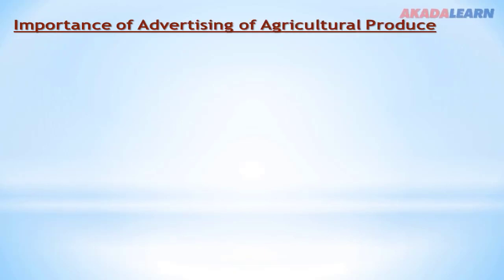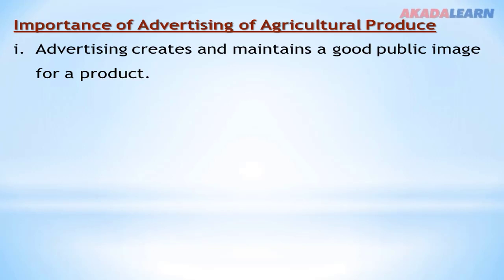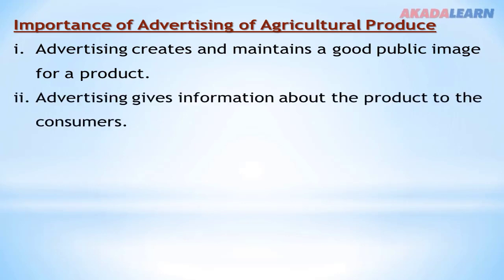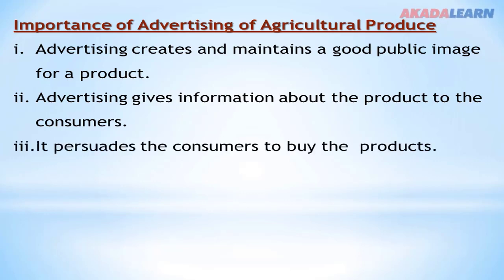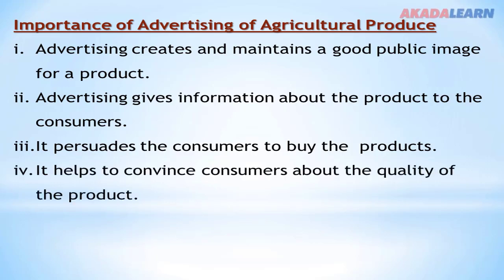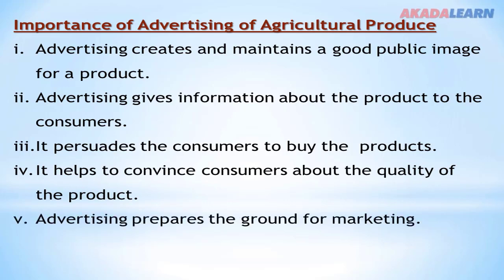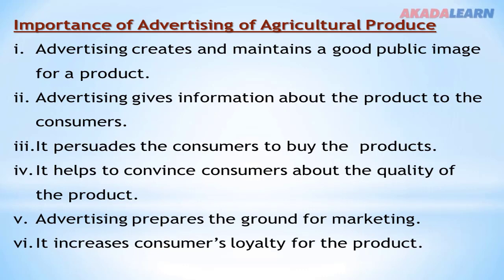What are the importance of advertising agricultural produce? Number one: advertising creates and maintains a good public image for the product. Number two: advertising gives information about the product to consumers. Number three: it persuades consumers to buy the product. Number four: it helps to convince consumers about the quality of the product. Number five: advertising prepares the ground for marketing. Number six: it creates consumer loyalty for the product — for example, products like OMO detergent and Maggi condiment have become so well-known through advertising that consumers now refer to all similar products by those brand names.